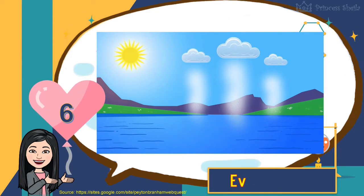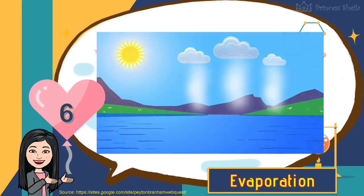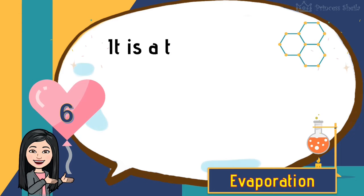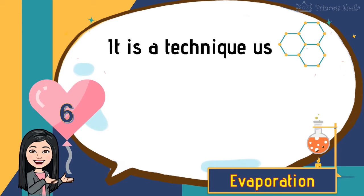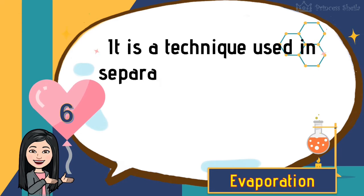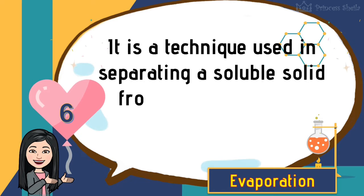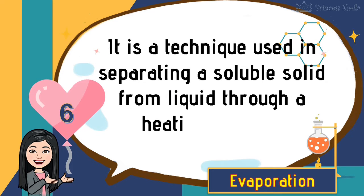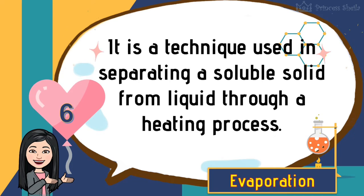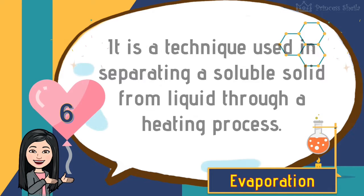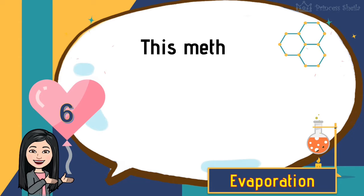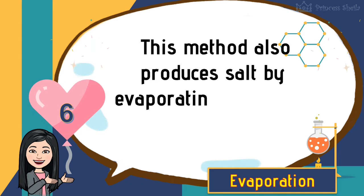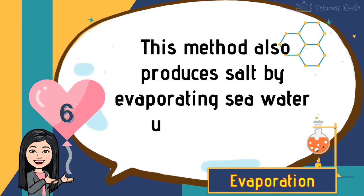Sixth is evaporation. It is a technique used in separating a soluble solid from liquid through a heating process. This method also produces salt by evaporating sea water under the sun.